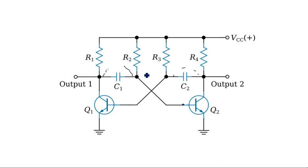In this astable multivibrator we are using both capacitors. If you look at the monostable multivibrator, one side has a capacitor and one side has resistors — wherever you have one resistor and one capacitor, that means one stable state and one quasi-stable state. But in the astable multivibrator, both sides of the collectors have capacitors C1 and C2, making both states quasi-stable.